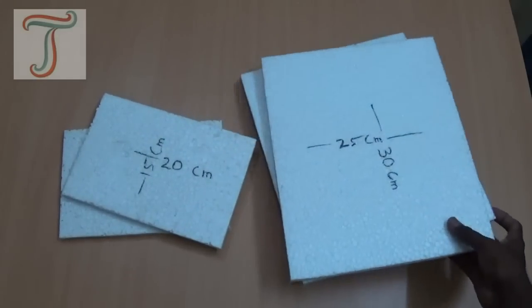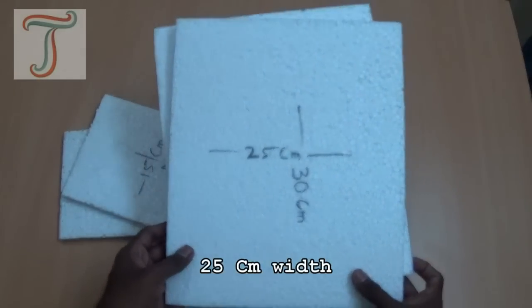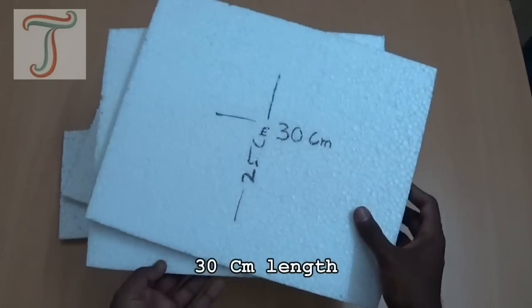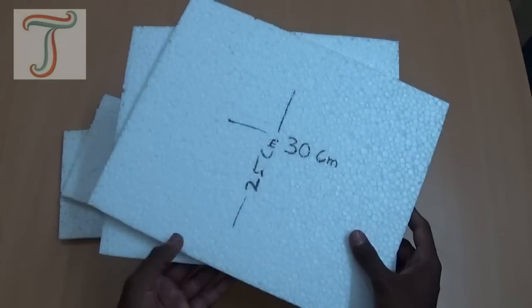First, cut two pieces in these measurements. These are the front and back walls of our house.